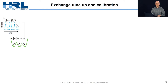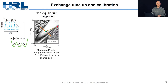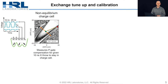The way we measure that in the lab is we take what's called a non-equilibrium charge cell. This is just where we apply a fixed X gate voltage and no P gate compensation, and measure exchange oscillations centered about the 1-1 charge cell for a given axis. As you can see in the plot here, by choosing the appropriate P gate compensation for this fixed X gate throw, we can center ourselves well above the 1-1 cell.